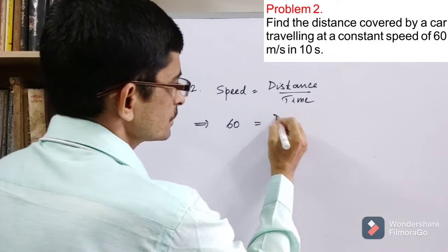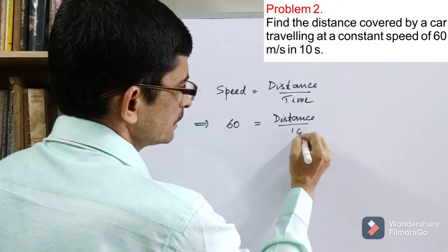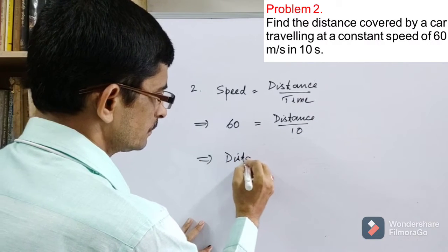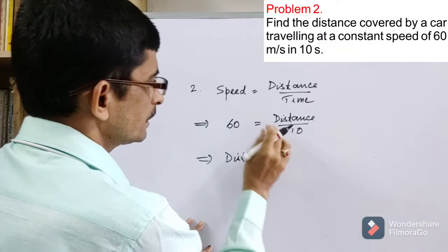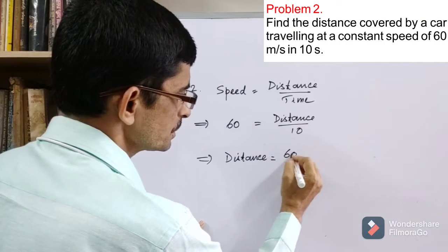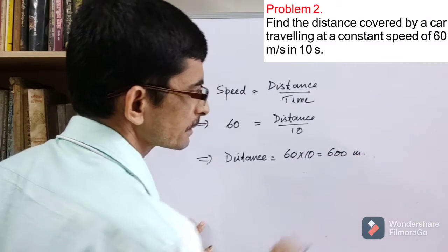Therefore, put the distance. Distance is equal to the product of these two, that is, multiplication of these two: 60 into 10, that is 600 meters. That's it.